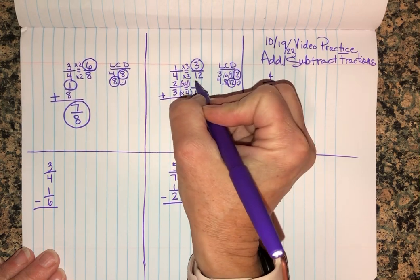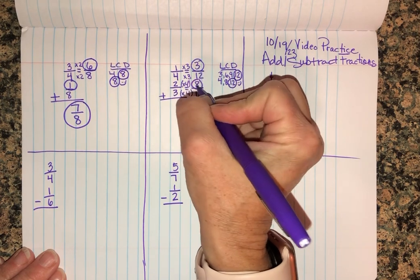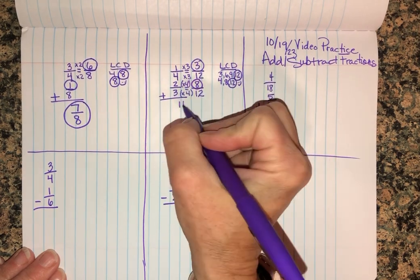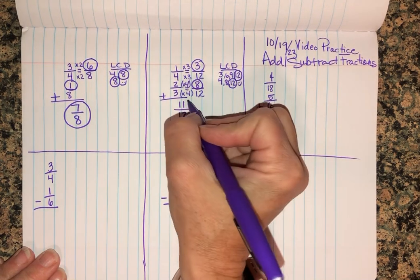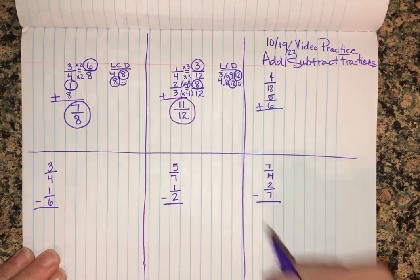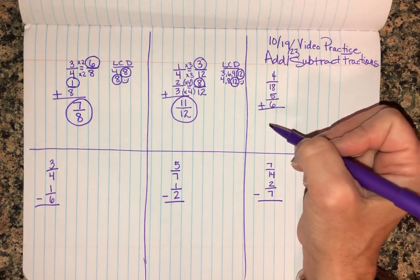Now I've got two times eight is - wait, four times two is eight. And all I have to do is three plus eight and I get eleven-twelfths. And this one also cannot be simplified.